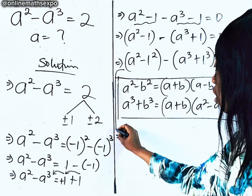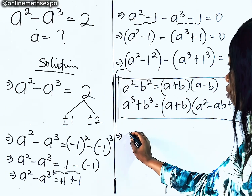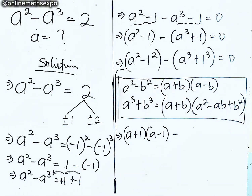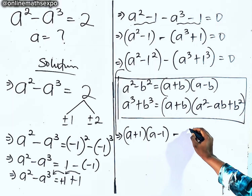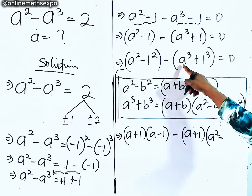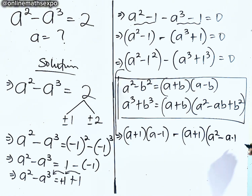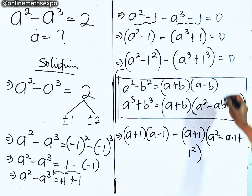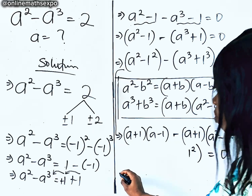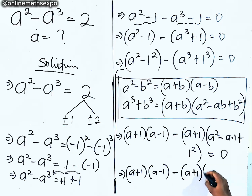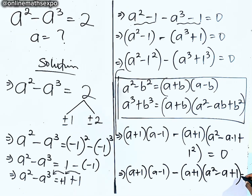So we are going to apply these identities. From here, apply the first one: we have A plus 1 into A minus 1 for this part. Remember there is a subtraction sign. For the second part, apply the sum of cubes: so we are going to have A plus 1 into A squared minus A times 1 plus 1 squared, and everything is equal to 0. Simplifying, we have A plus 1 into A minus 1, minus A plus 1 into A squared minus A plus 1, equal to 0.